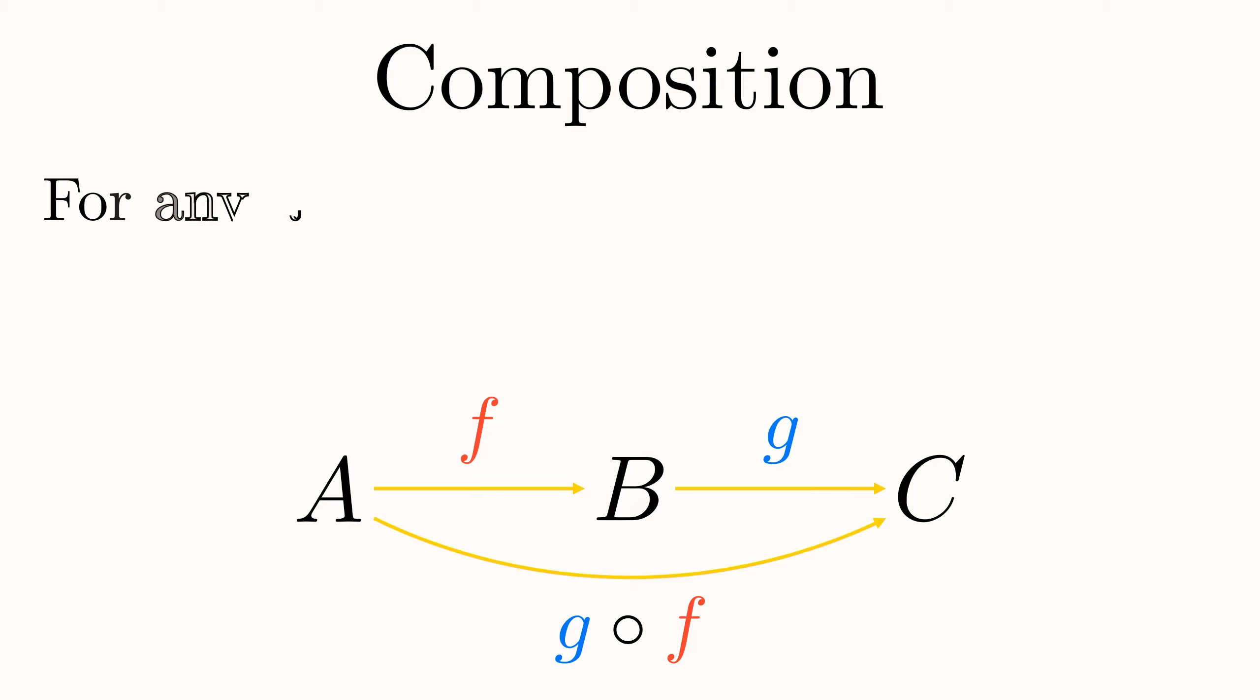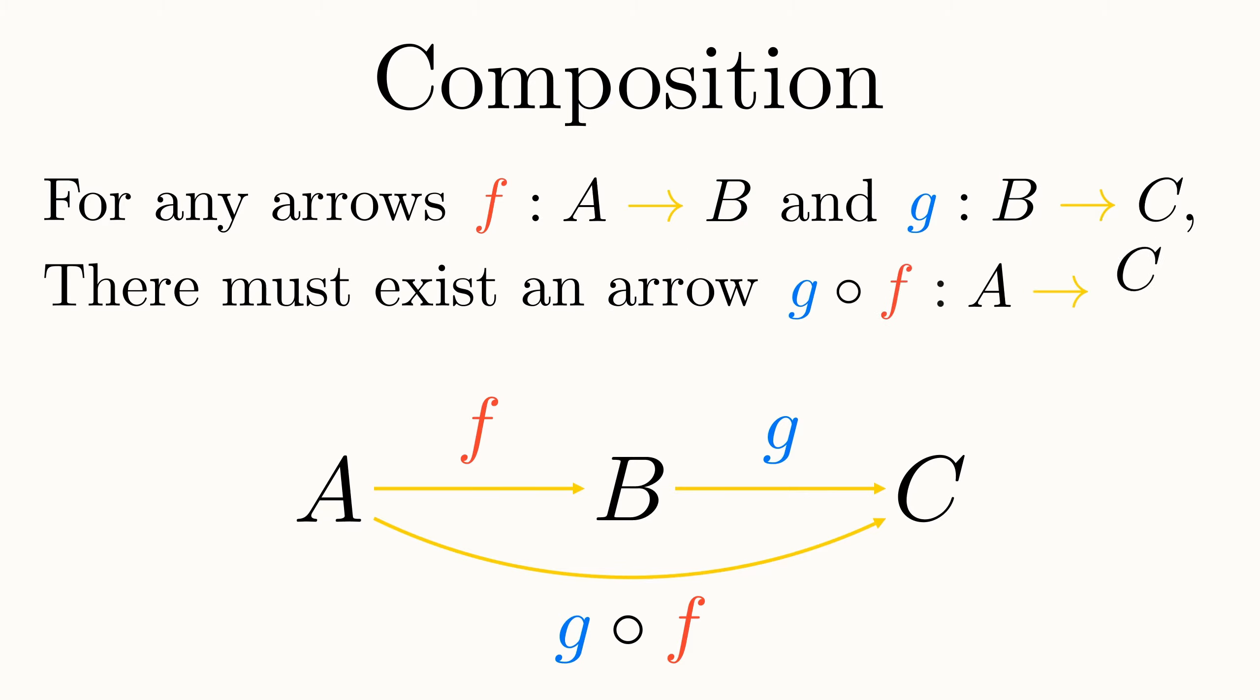We say that for any two arrows, f from A to B and g from B to C, crucially where the codomain of f equals the domain of g, there must be an arrow g follows f from A to C in our category. That is, with the domain of f and the codomain of g. In instances where two arrows do not have this common middle object, their composition is simply not defined.